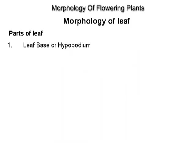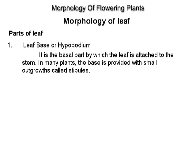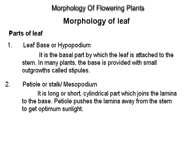Leaf base or hypopodium: it is the basal part by which the leaf is attached to the stem. In many plants, the base is provided with small outgrowths called stipules. Petiole or stalk (mesopodium): it is the long or short cylindrical part which joins the lamina to the base. The petiole pushes the lamina away from the stem to get optimum sunlight.